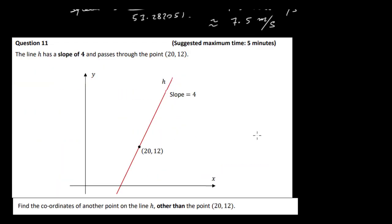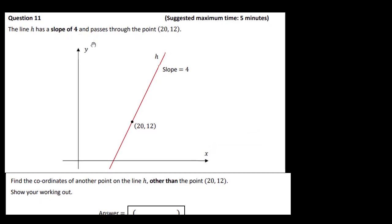OK, so that's it for question 10. Let's have a look at question 11. The line h has a slope of 4. So this is our line h here, slope of 4. Passes through the point 20, 12. Find the coordinates of another point on the line h other than 20, 12. Show your working out. OK, so we've got to actually show what we're doing here. What I'm going to do to solve this is to find the equation of the line. So I have the slope. I have a point. So I'm going to say y minus y1 is equal to m into x minus x1. So it's going to be y minus 12 is equal to 4 into x minus 20. So that will give me y minus 12 is equal to 4x minus 80. Let's put it in the form y is equal to mx plus c. y equals 4x and then minus 80 plus 12, that's going to be minus 68.